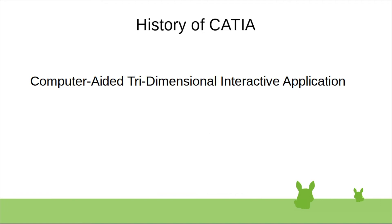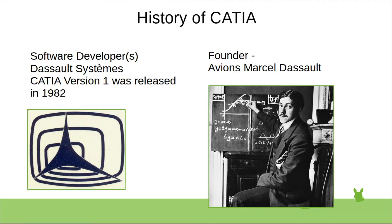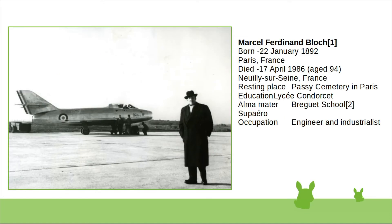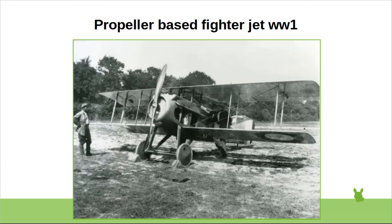Let's know the history of this software. CATIA stands for Computer Aided Tridimensional Interactive Application. This software was developed by the company Dassault Systèmes under the French aircraft company Dassault Aviation. The founder of this company was Marcel Dassault, a French aeronautical engineer who developed propeller-based fighter jets during World War I, and later established his own company as Dassault Aviation.